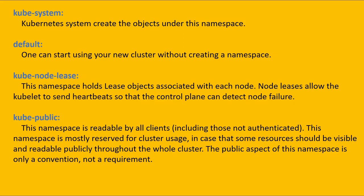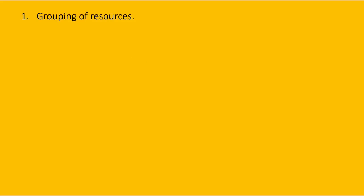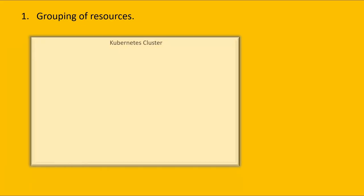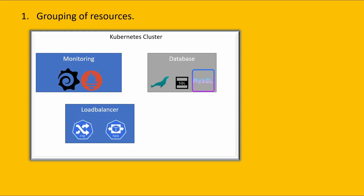The fourth topic is where we can use namespaces. The first use case is grouping of resources. For example, we have one Kubernetes cluster and create three namespaces: monitoring, dashboard, and load-balancer. We add Grafana and Prometheus in the monitoring namespace, MariaDB, SQL, and MySQL databases in the database namespace, and Ingress and HPA under the load-balancer namespace. This way we can segregate applications with the help of namespaces.